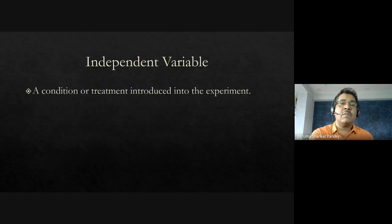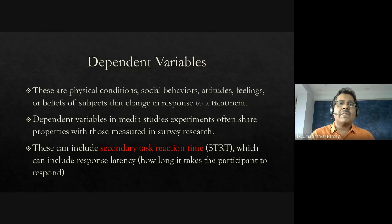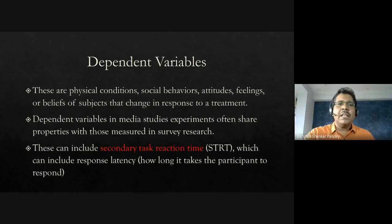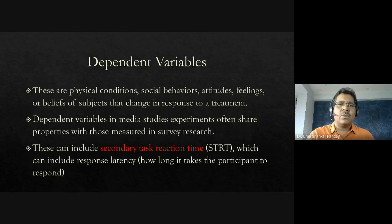The dependent variable provides us with the data — it could be physical conditions, social behaviors, attitudes, feelings, or beliefs of the subject. For example, after consuming violent content, did your attitude change? The first part is introducing subjects to those conditions; the second part is measuring the outcome, which could be through Likert scales, standardized instruments, or self-reported responses.